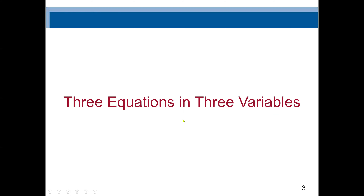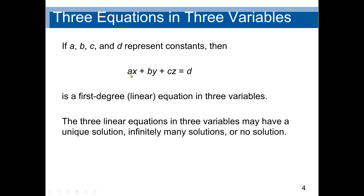Three equations in three variables look like this: if A, B, C are coefficients of the three variables, then D is a constant value. So we have AX plus BY plus CZ equal to D, where A, B, C, D can be any value. The variables' exponent will be 1, and that makes it a linear equation — the degree of the variables is 1. The three linear equations in three variables may have a unique solution, infinitely many solutions, or no solution at all.